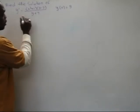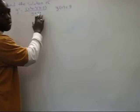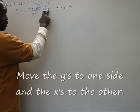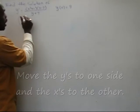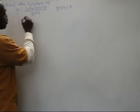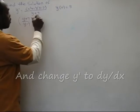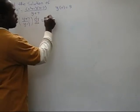As a result, I'm going to have Y plus 7 DY equals X squared plus 1 DX.